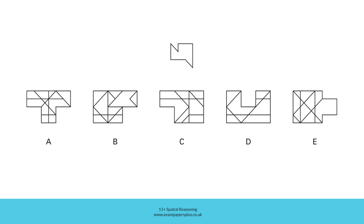To answer this question, we're going to be looking for this shape which is hidden in one of these five answer options. The shape may be rotated, so may not be in the position it appears here. It may be made up of one or more smaller sections, so the shape may be made up of lines which denote these sections. The shape will not change in size; it will remain the same size as the example you're shown.